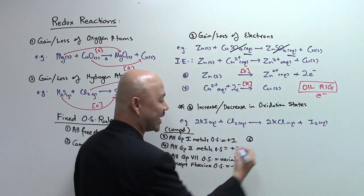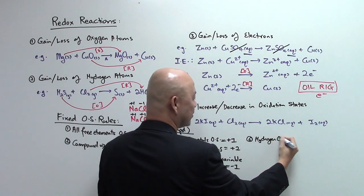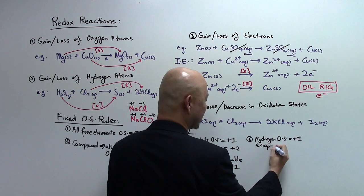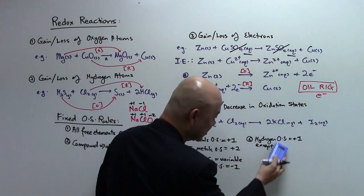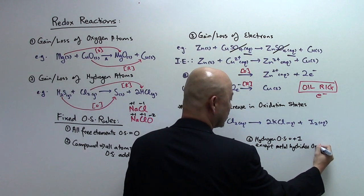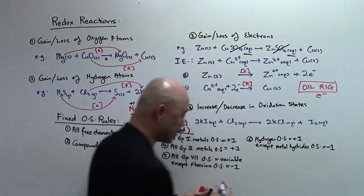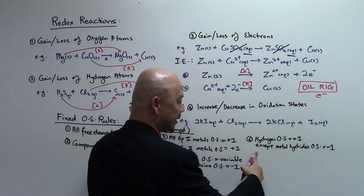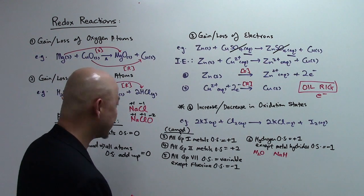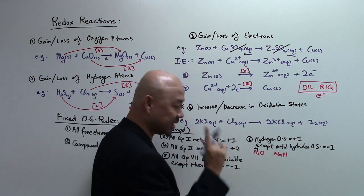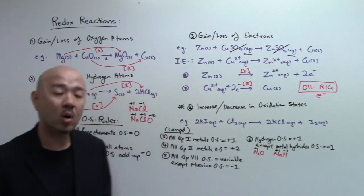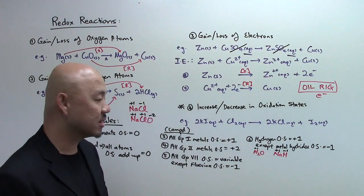Next, hydrogen in a compound: the oxidation state is usually plus one, except when hydrogen is in metal hydrides, whereby the oxidation state is minus one. For example, in water (H₂O), hydrogen has an oxidation state of plus one. But in sodium hydride (NaH), sodium is plus one, so hydrogen's oxidation state is minus one.